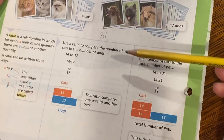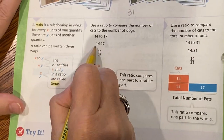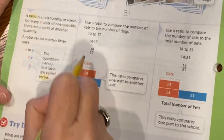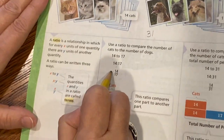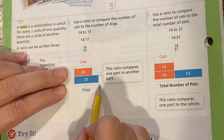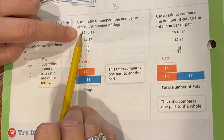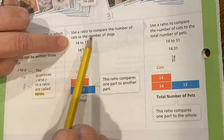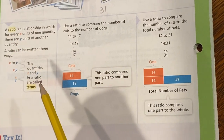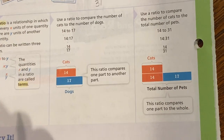The ratio comparing the number of cats to dogs is 14 to 17, or 14 semicolon 17. You would read this as 14 to 17. Here's a bar diagram showing that relationship — cats to dogs. In terms of the order of numbers, they said cats to dogs, so cats is the first number and dogs is the second. If they said compare dogs to cats, you'd write the dogs number first.